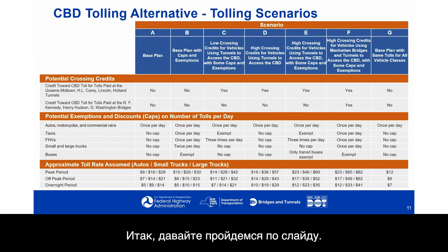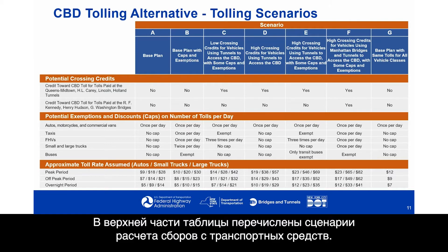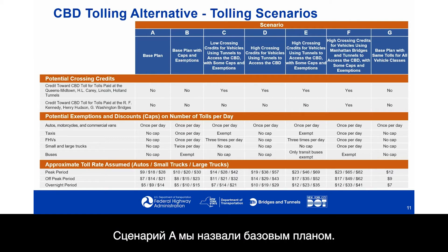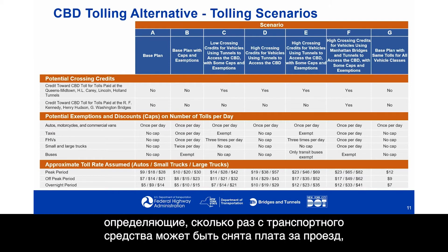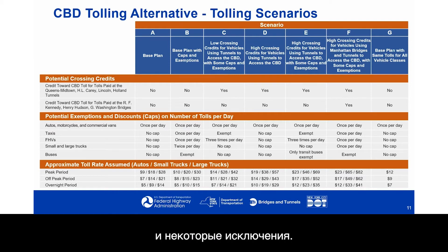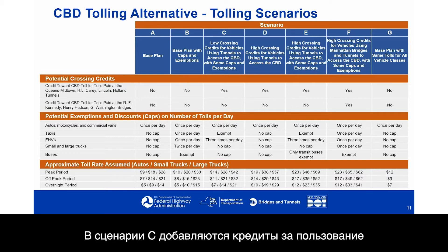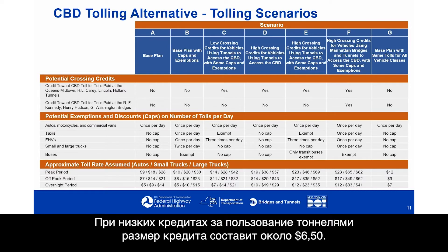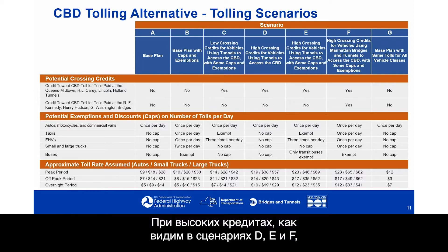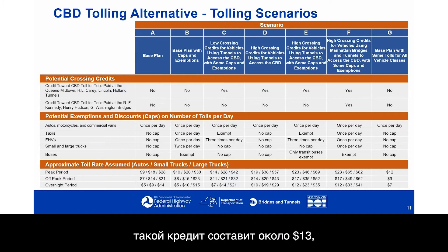Tolling Scenario A is the base plan characterized in the legislation. Scenario B adds the same base plan with caps on how many times a vehicle can be tolled and certain exemptions. Scenario C adds low crossing credits — roughly $6.50 — for vehicles using tunnels to access the CBD, with some caps and exemptions. Scenarios D, E, and F use high crossing credits of roughly $13.